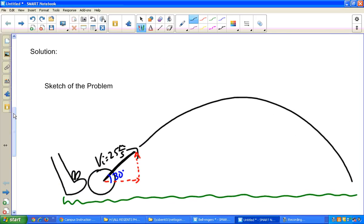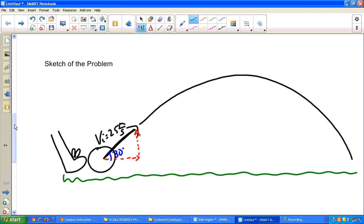Here's a sketch of the problem. I always start my problems with a sketch. It really makes these projectile problems easy to understand. We have here the foot kicking the ball. We see that the projectile is launched with an initial velocity of 25 meters per second at an angle of 30 degrees.